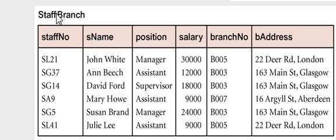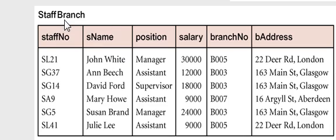A transitive dependency occurs when you have A functionally determines B, and B functionally determines C. That's another way to know whether you're going to need another table. In this case, with the staff branch table, how do we know it's going to be two tables? It's going to violate the transitive rule.